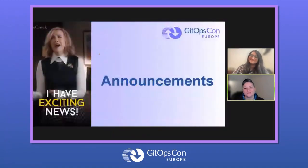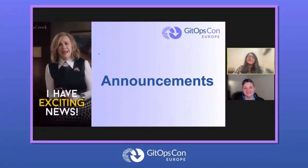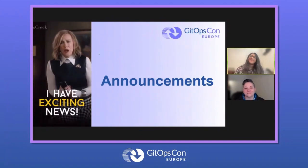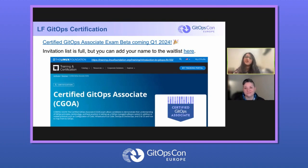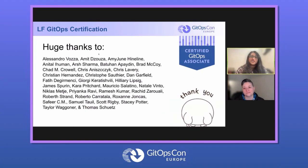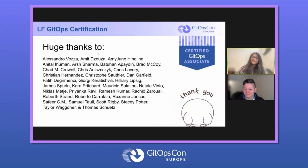Now we'd like to talk about some exciting announcements. The first one is that the Certified GitOps Associate certification goes beta in Q1 of next year. The invitation list is full, but you can add your name to the wait list by clicking on the link on this slide. We really want to give a huge thanks to everyone who's making the Certified GitOps Associate program happen. They've been working tirelessly since August, and we really appreciate all the hard work.